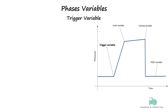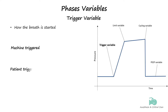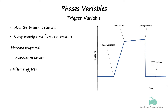Trigger variables determine how a breath is started. A breath can be initiated or triggered either by the ventilator or the patient using time, flow, and pressure. Ventilator-triggered breaths are initiated in response to a timer inside the ventilator. Such breaths are characterized as mandatory, implying that the patient has no choice in the matter.